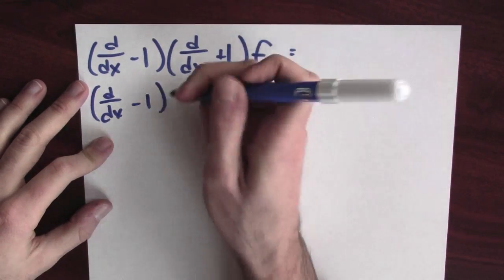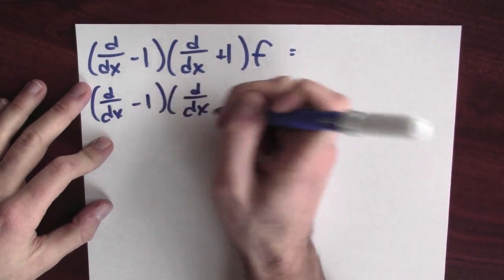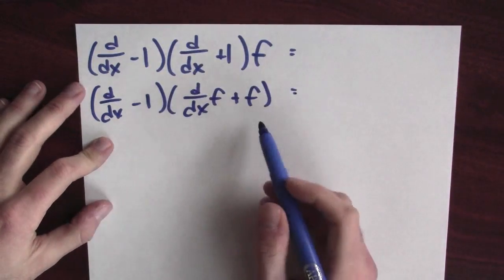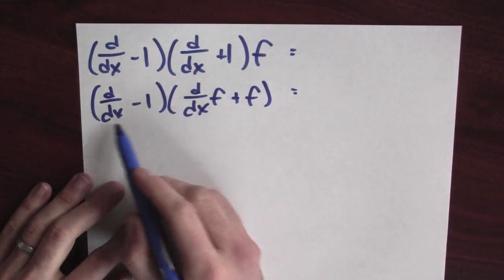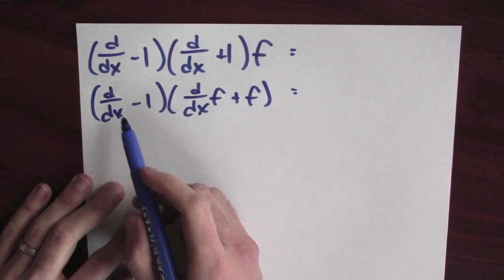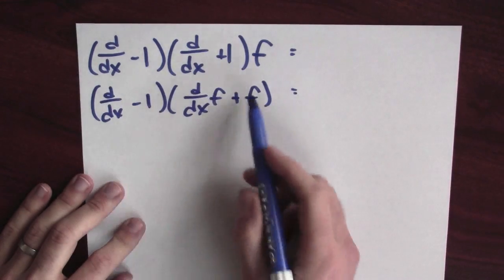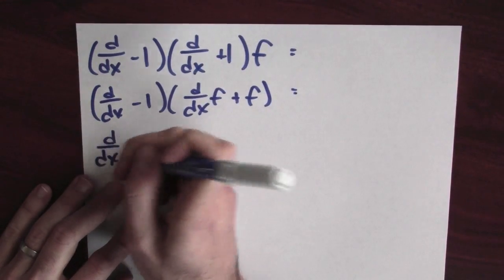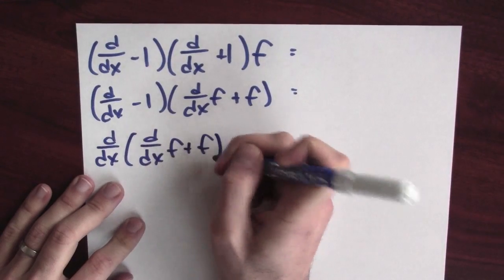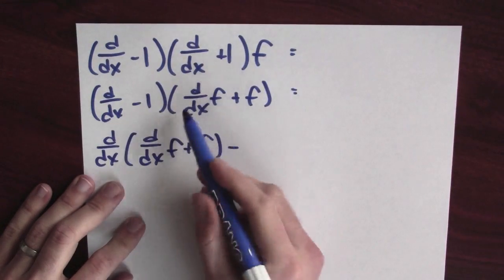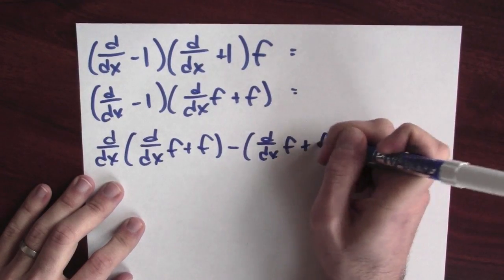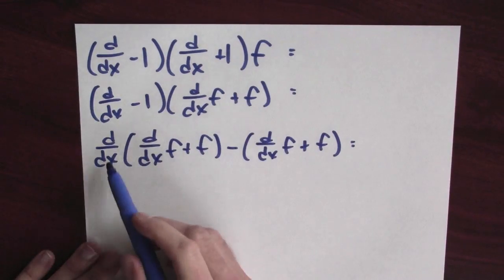I'm going to act like this distributes. So I'll write d/dx of f plus 1 times f. Now I can keep on going, right? This, if you kind of imagine, might distribute over this. What would that mean? I'm going to d/dx this whole thing. So d/dx of d/dx of f plus f minus 1 times this, so minus d/dx of f plus f. And now I can keep calculating.